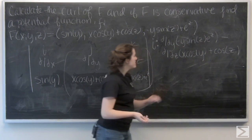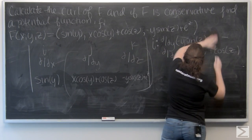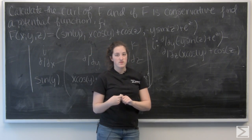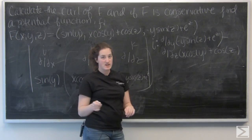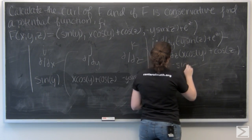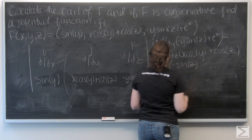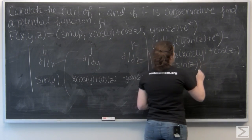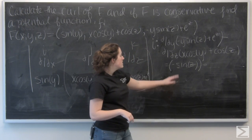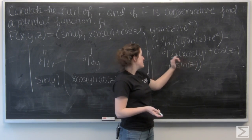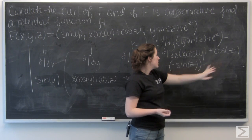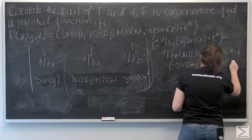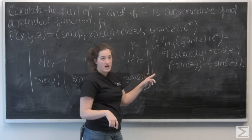Let's go ahead and take these partial derivatives. The derivative of negative y sine z with respect to y is going to be negative sine z. And then the derivative of e to the z with respect to y is going to be zero, because that's treated like a constant. The derivative of x cosine y with respect to z is zero, and the derivative of cosine z with respect to z is negative sine of z. So I actually get zero for my i component.